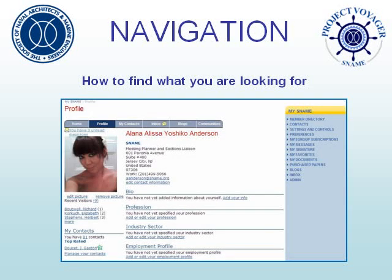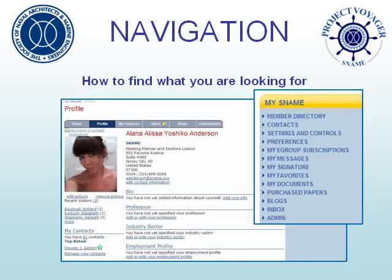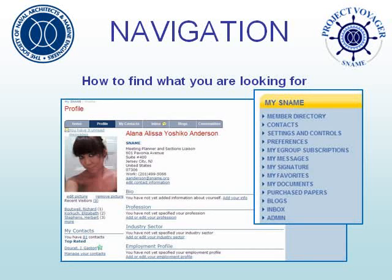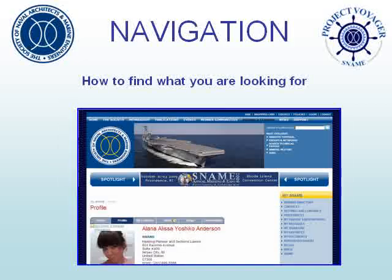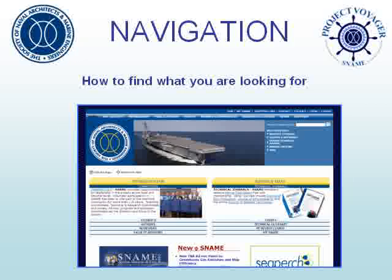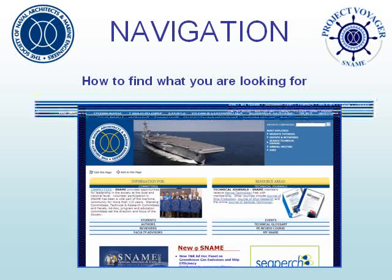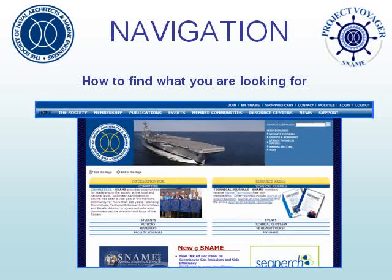After logging in, you'll come to your profile page. Like all internal pages, it has a right navigation bar with helpful links. Notice the fourth link down, called Preferences — this is where you establish privacy settings for the areas of your profile. On top of the profile page, and all Snami pages, are the main links to navigate the site. This is the main navigation bar.